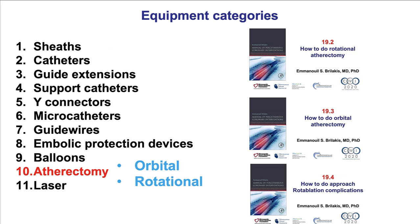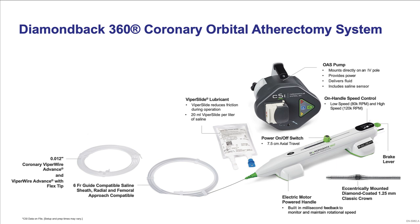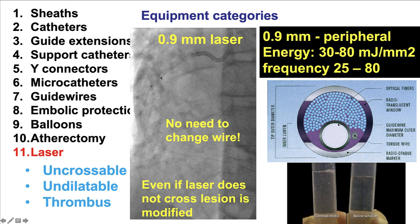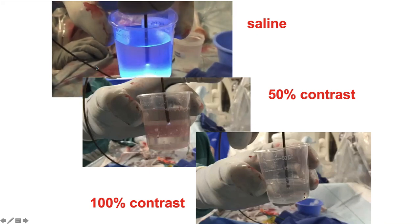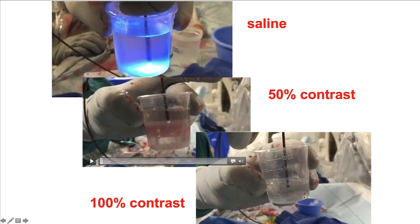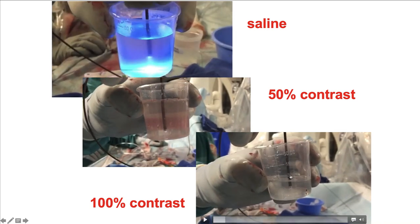Category number 10 is atherectomy. There is orbital and rotational atherectomy, to be discussed in detail in separate videos. This is the Rotablator system — the Classic and the Rotapro — and also the orbital atherectomy Diamondback 360 system. Laser can also be extremely useful for balloon-uncrossable and undilatable lesions, and also for cases of thrombus. The machine requires a five-minute warm-up, and when fired into contrast it creates micro-explosions that help modify the plaque inside the coronary artery.